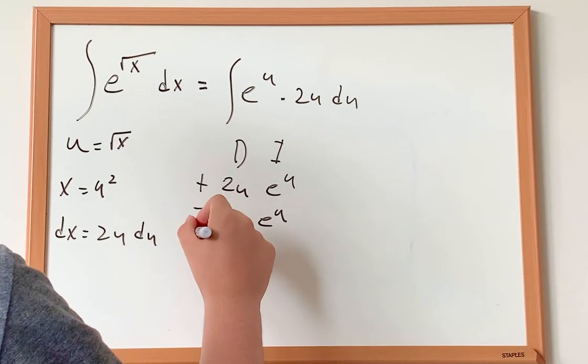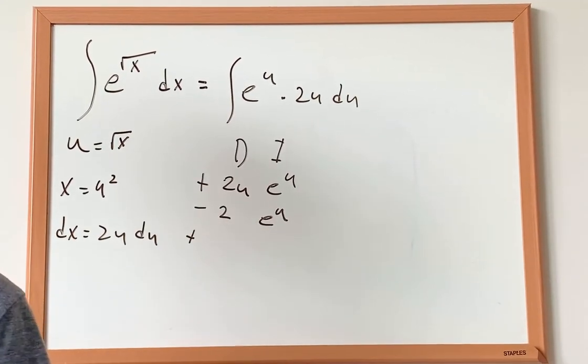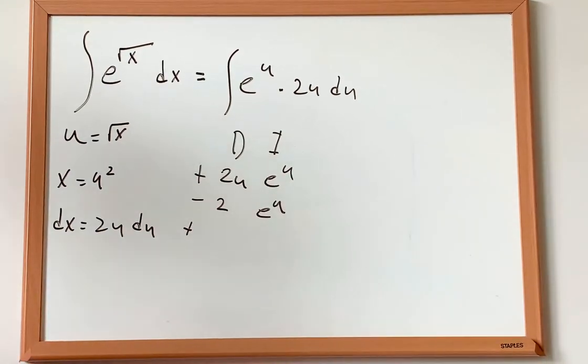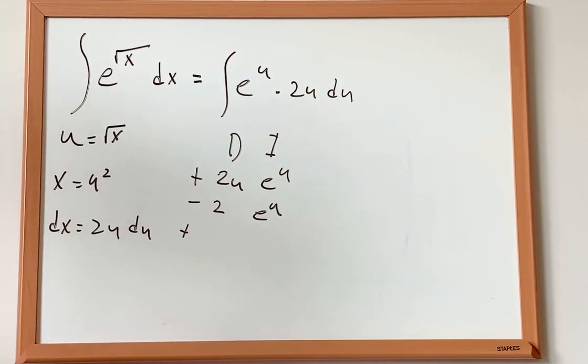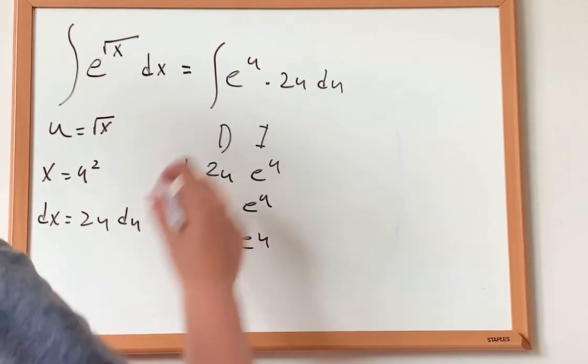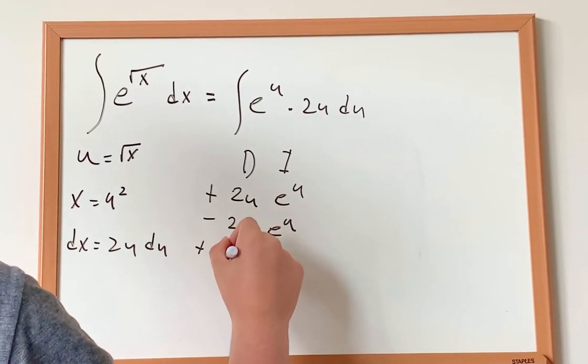And now also I can add a third part. The integral of e to the power of u is just e to the power of u. And the derivative of 2 is 0.